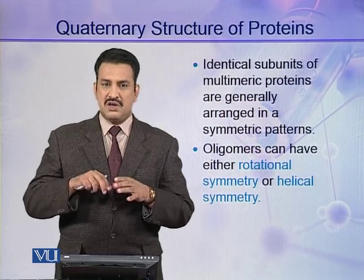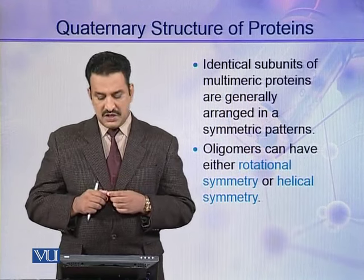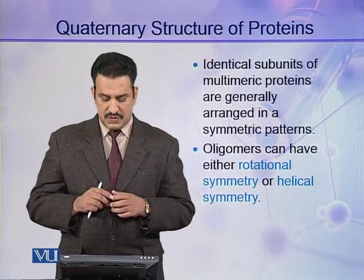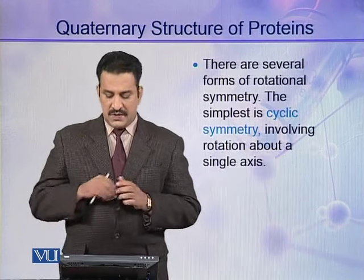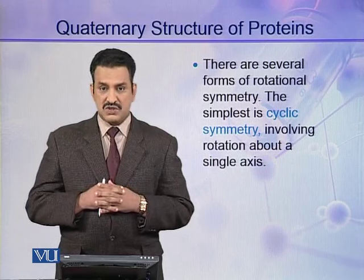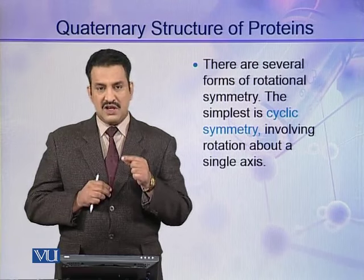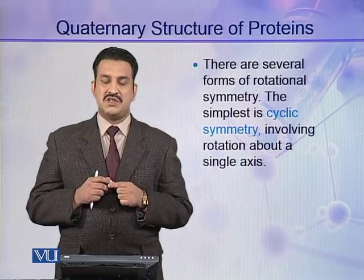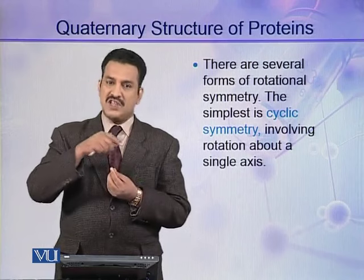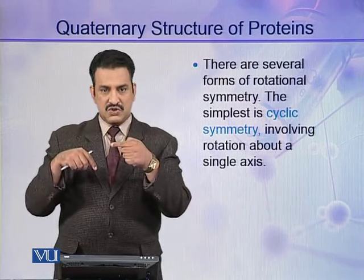They are not arranged roughly — rather, they have very regular symmetric patterns. Mainly two types of symmetry are present in proteins: rotational symmetry and helical symmetry. There are several forms of rotational symmetry, and the simplest is cyclic symmetry. In cyclic symmetry, there is a single axis of rotation around which the oligomers or protomers rotate.